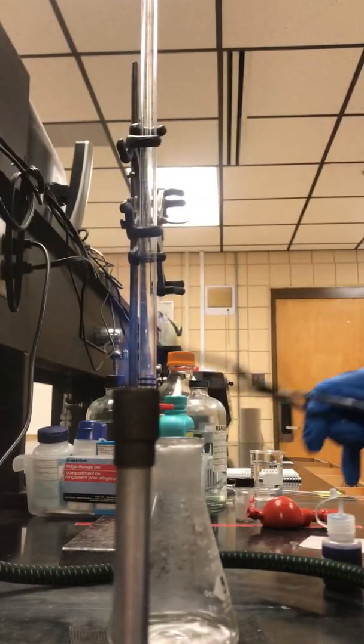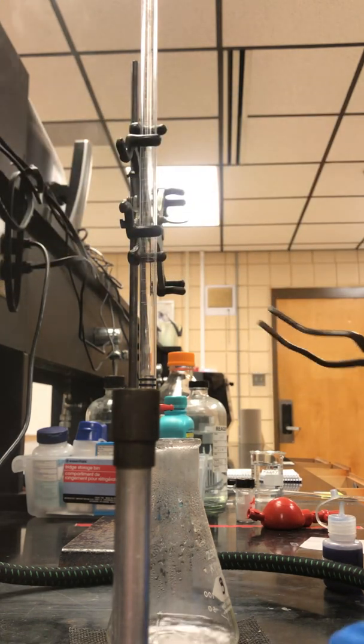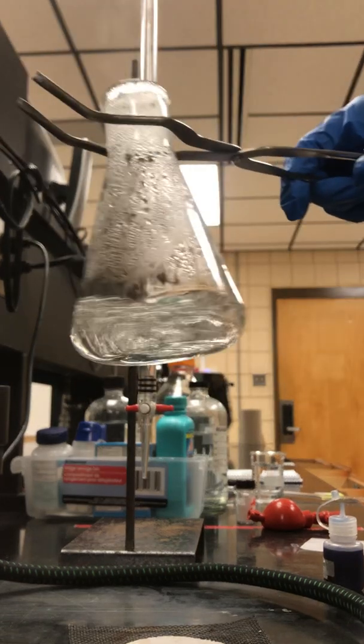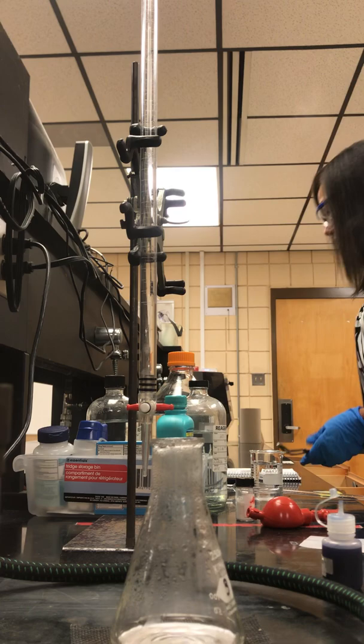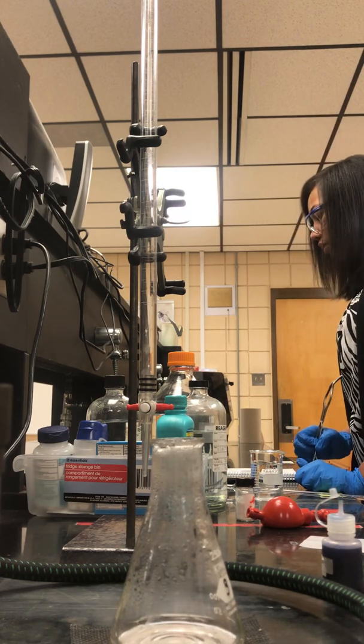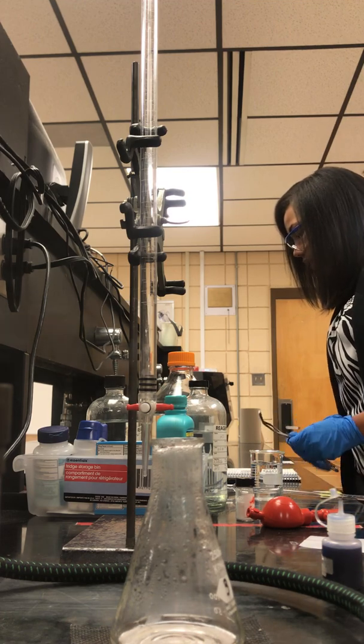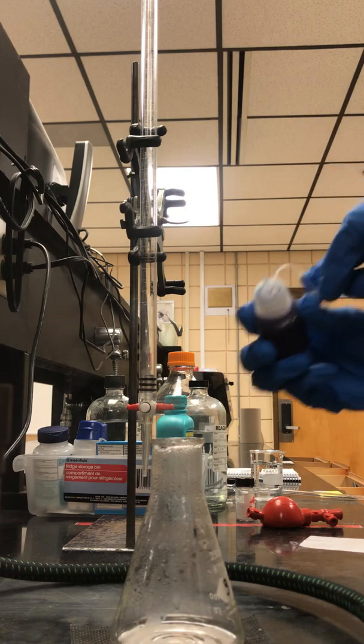Once you're finished with the Bunsen burner, turn it off and move it out of your way. You notice we have our gentle boil. After we've heated for that one minute to remove the dissolved carbon dioxide, keep gently swirling.